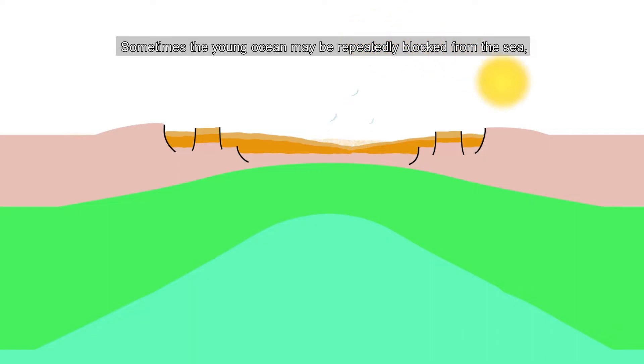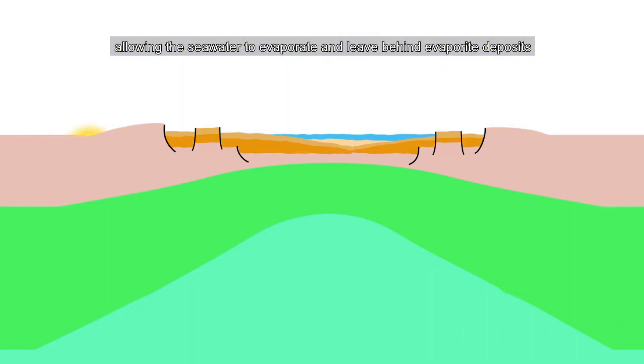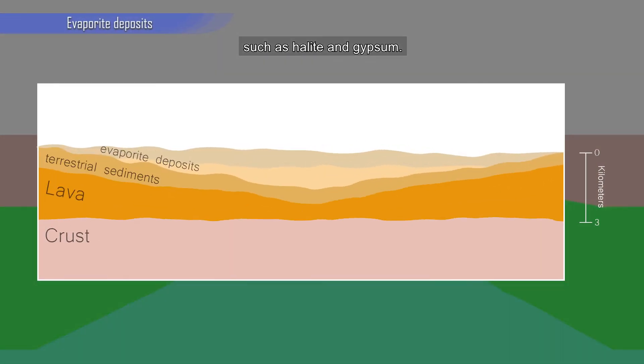Sometimes, the young ocean may be repeatedly blocked from the sea, allowing the seawater to evaporate and leave behind evaporite deposits such as halite and gypsum.